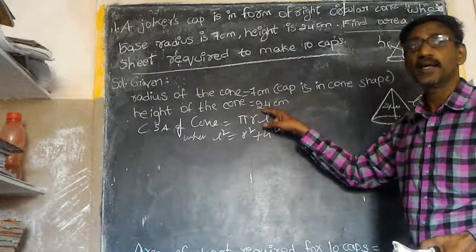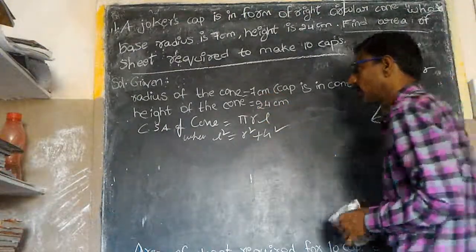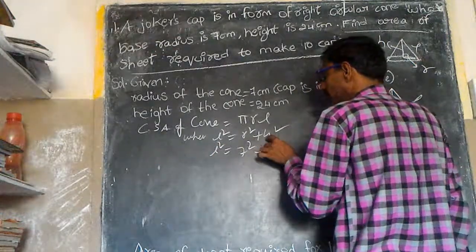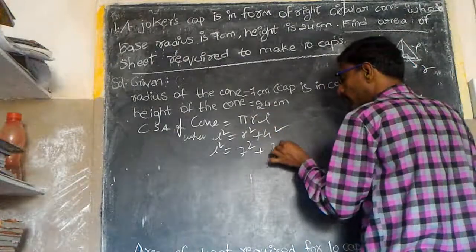This is r, this is h. So L² is equal to R² which is 7², H² which is 24².